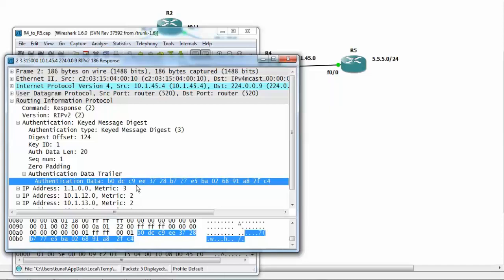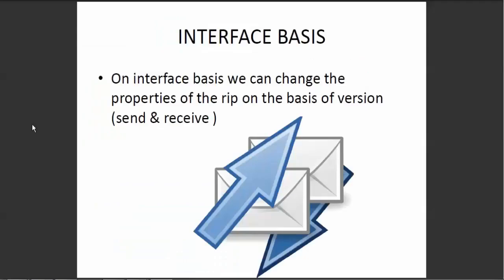This is the proper way to configure authentication between two routers in RIP. It is good practice, but it can only be applied in version 2. Now let's look at interface-level characteristics in RIP. In our earlier section, when changing from version 1 to version 2, some interface-level properties also changed, but we can change those specifically.